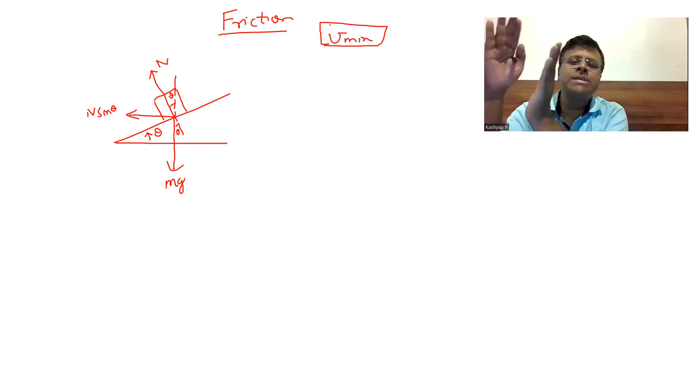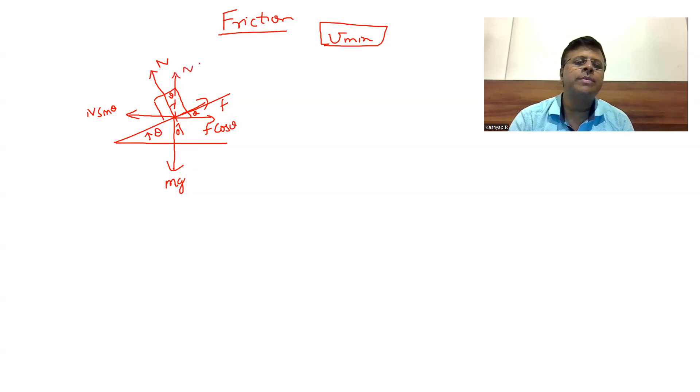If I talk about V minimum, there is a tendency to slide down. The relative motion is opposed by friction, so friction will act in the upward direction. We can resolve this friction force. This angle is also theta. So this is F cos theta, and here you can say this is N cos theta. The component of friction in the upward direction is F sine theta. I have resolved the forces in the vertical and horizontal direction.